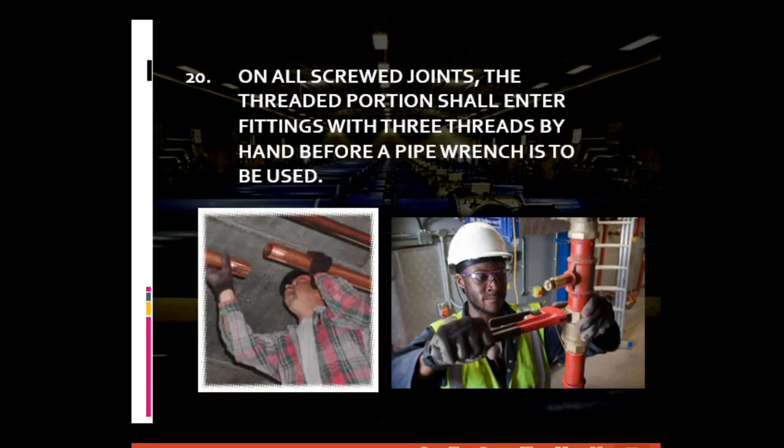For general piping requirement number twenty: on all screw joints, the threaded portion should enter fittings by three threads or three revolutions by hand before a pipe wrench is used. This is to prevent possible damage during the tightening of screwed joints or pipes. It is a standard procedure to manually enter at least three threads of the screwed pipe or joint by hand before making use of a pipe wrench — one thread being equivalent to one revolution.